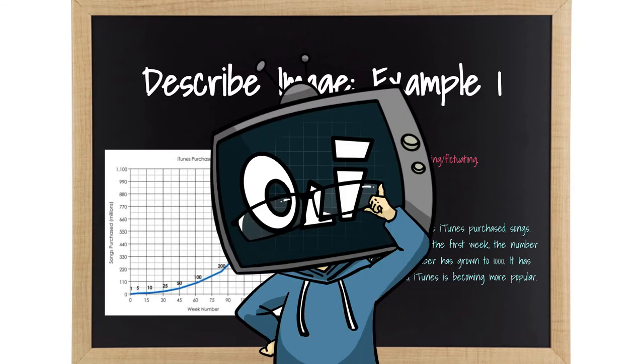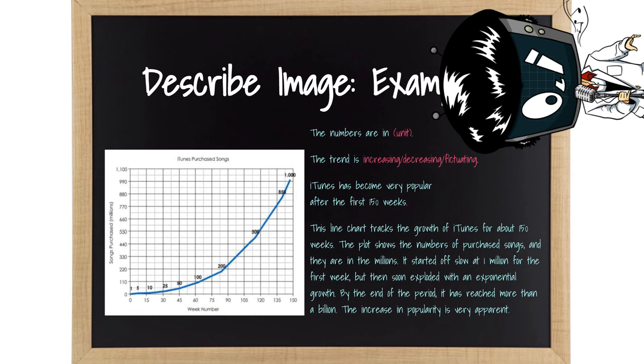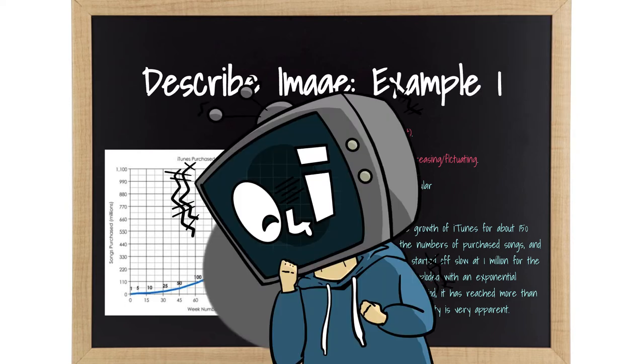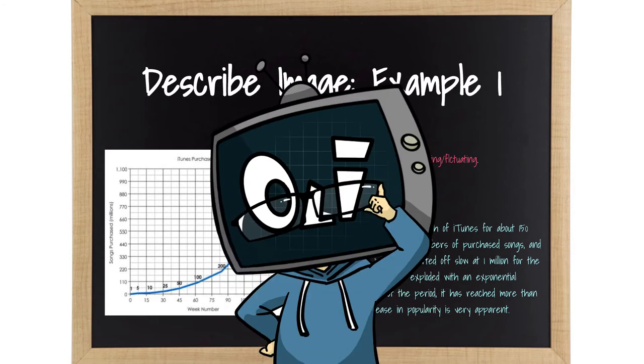Here is the flexing version. This line chart tracks the growth of iTunes for about 150 weeks. The plot shows the numbers of purchased songs, and they are in the millions. It started off slow at 1 million for the first week, but then soon exploded with an exponential growth. By the end of the period, it has reached more than a billion. The increase in popularity is very apparent. If you end up with something in between of those two answers, then I'll say you are almost certainly fine with content. As to the delivery regarding fluency and pronunciation, refer back to the speaking general and read aloud videos in the crash course.